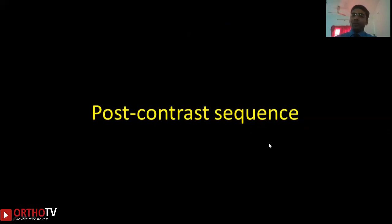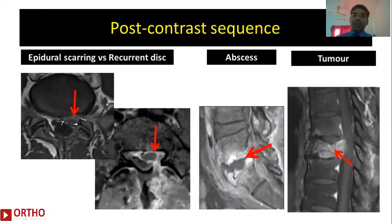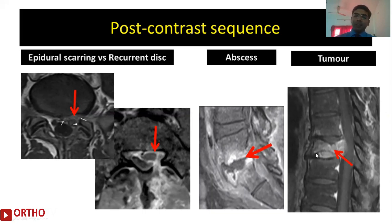Sometimes we go for a post-contrast sequence where contrast is injected intravenously. It is very important for identifying vascular structures. For example, if a patient is having post-operative pain and you want to differentiate recurrent disc from epidural scarring, contrast sequences are essential: epidural scarring won't show any hyperintense signal, whereas a recurrent disc herniation due to inflammation will show peripheral enhancement around the re-herniated disc. Similarly, an abscess cavity itself is hyperintense, but the peripheral tissue around it will also be hyperintense on post-contrast. In case of a tumor there will be uniform hyperintense signal, and granulomas also show a hyperintense signal on post-contrast sequences.